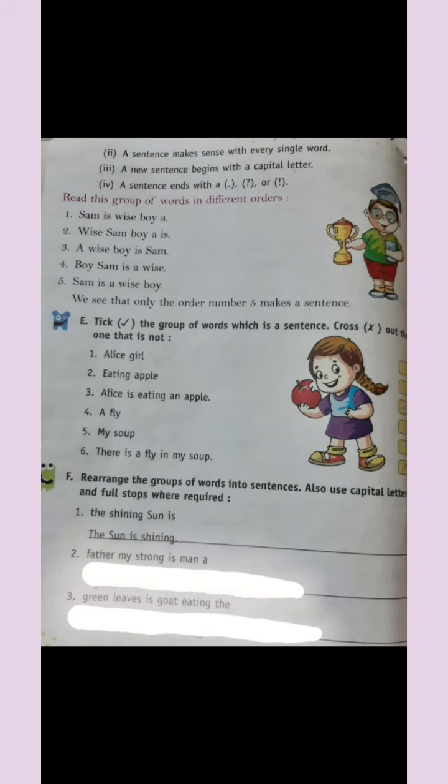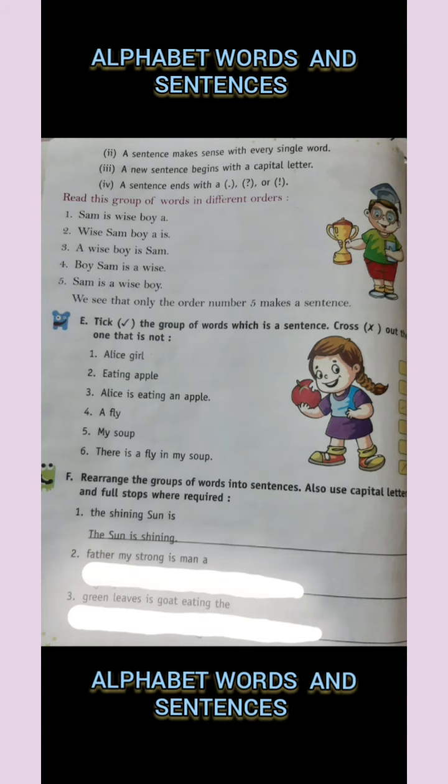So children, this is the second rule: a sentence makes sense with every single word. In a sentence, with every single word, they make sense. If we are giving words but there is no meaning and no sense in them, then it will not make a sentence.